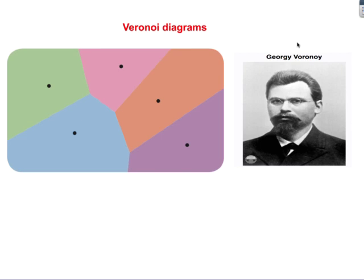Voronoi diagrams are based on this idea: if you're standing at a certain point, which of these black dots is closest to you? Basically, anything in the green area is closest to this black dot, anything in the pink area is closest to this black dot, anything in the blue area is closest to this one, and so on.